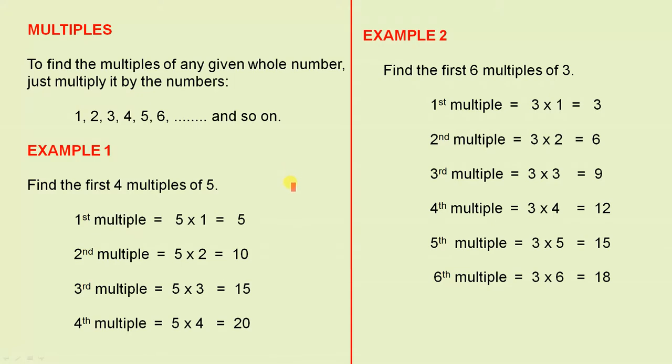Example 1. Find the first four multiples of 5. So the first multiple is 5 times 1, which is 5. The second multiple is 5 times 2, which is 10.